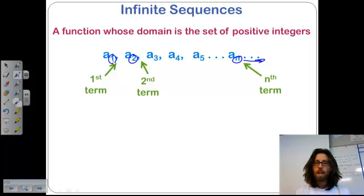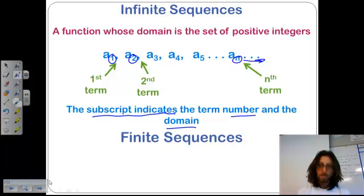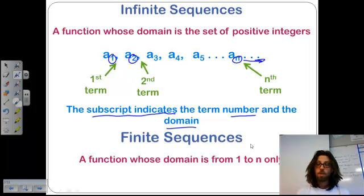This is the first term. The 1 may or may not have an exact, or well, it'll have to do with the formula. But just so we have everything here, the subscript indicates the term number and the domain, and basically it's the input. And now a finite sequence is just a function whose domain is only from 1 to some finite number n. So basically instead of having that little ellipsis there that it keeps going, it stops. So it has a set number of values in that function.